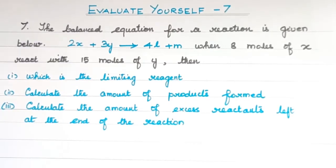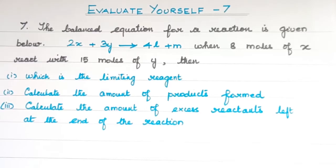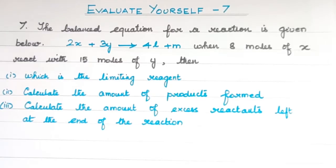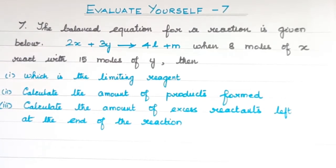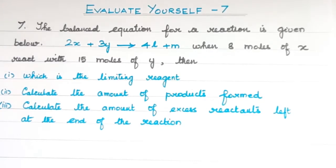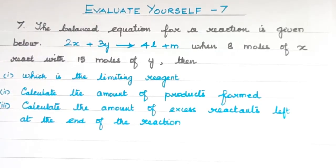7th question: the balanced equation for a reaction is given below — 2X plus 3Y gives 4L plus M. In the equation, observe what chemical substances are given as reactants X and Y, and products L and M. When 8 moles of X react with 15 moles of Y, which is the limiting reagent? Calculate the amount of products formed.